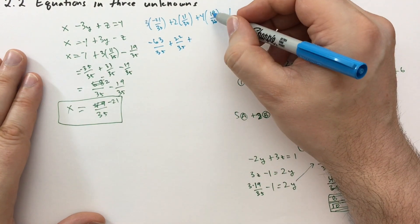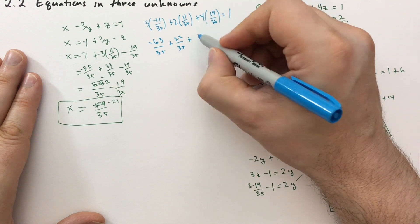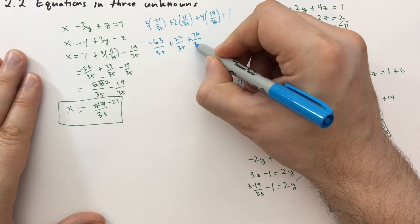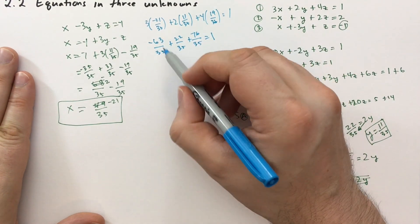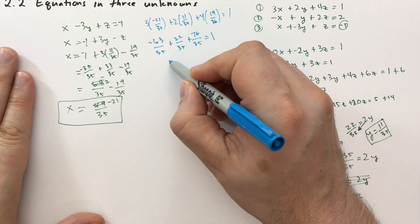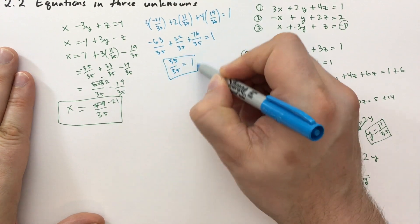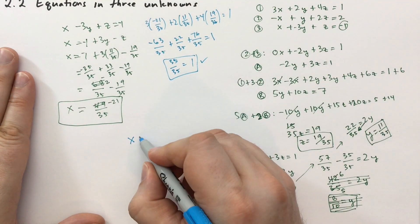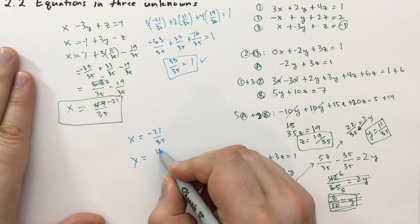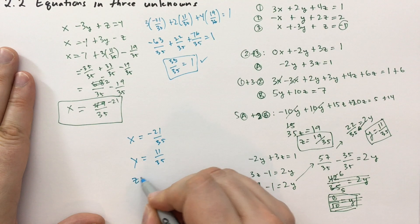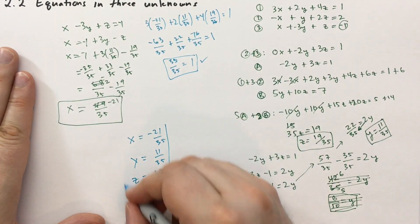That would be the same as 4 times 20 minus 4. So that's 76 over 35 equals 1. So 76 minus 63 is 13 plus 22 is 35 over 35. And that, sure enough, checks out. Okay. So the solutions are x equals minus 21 over 35, y is equal to 11 over 35, and z is equal to 19 over 35. That's the solution. Okay.